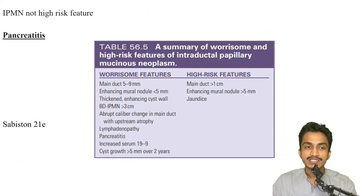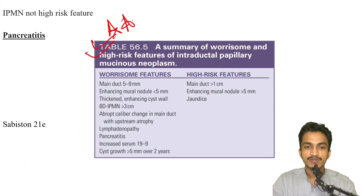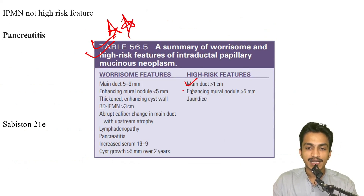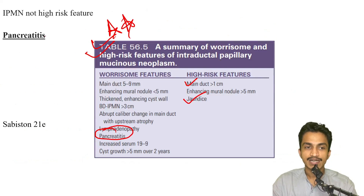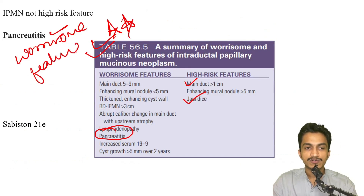IPMN — what is not a high-risk feature: covered in the must-know topic. High-risk features include main duct greater than 1 cm, enhancing mural nodule greater than 5 mm, and jaundice. Pancreatitis is among the worrisome features, not a high-risk feature. So the answer is pancreatitis, which is a worrisome feature.